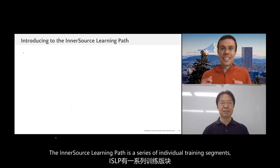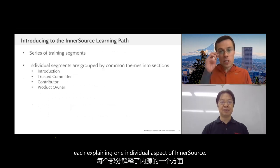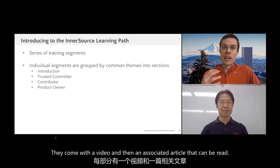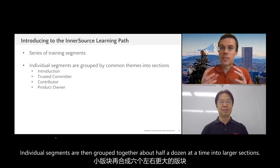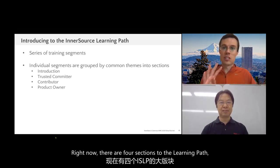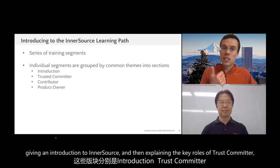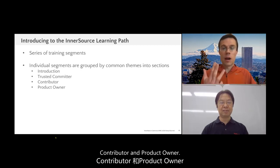The InnerSource learning path is a series of individual training segments, each explaining one individual aspect of InnerSource. They come with a video and then an associated article that can be read. Individual segments are then grouped together about a half dozen at a time into larger sections. Right now there are four sections to the learning path, giving an introduction to InnerSource, and then explaining the key roles of trusted committer, contributor, and product owner.